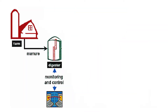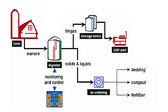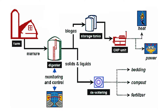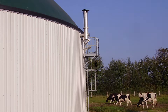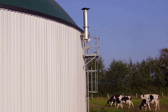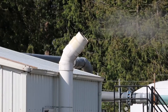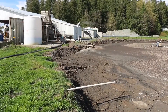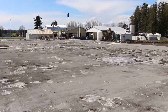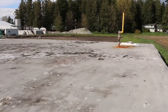ADs are located on farms, and in some cases there's a centralized anaerobic digestion management facility that is used by several farmers. There are a few different kinds of ADs to choose from, so you must pick the right one for your operation. Some of the basic types of ADs include lagoon, plug flow, and complete mix.